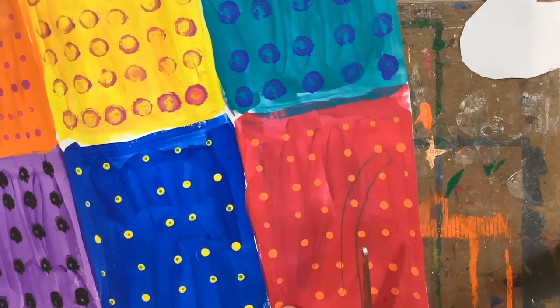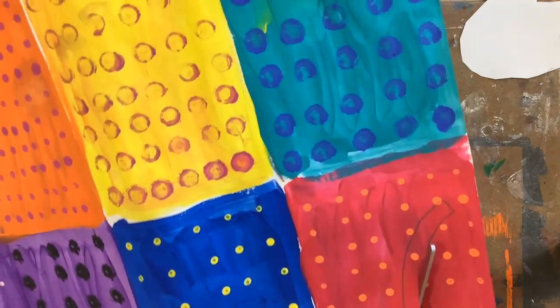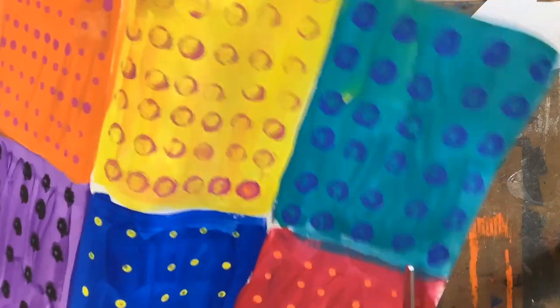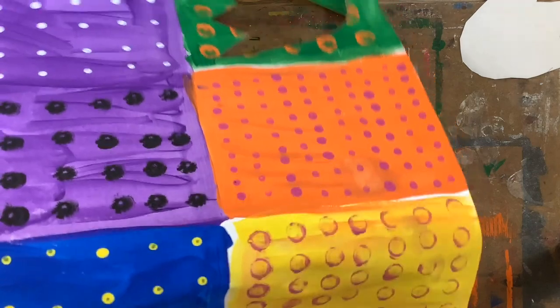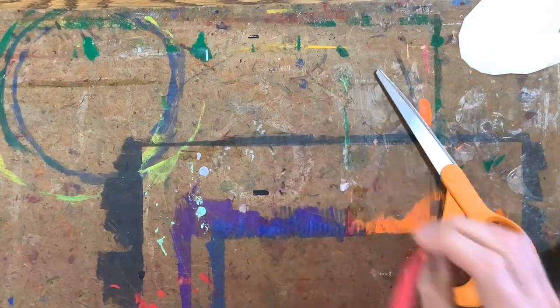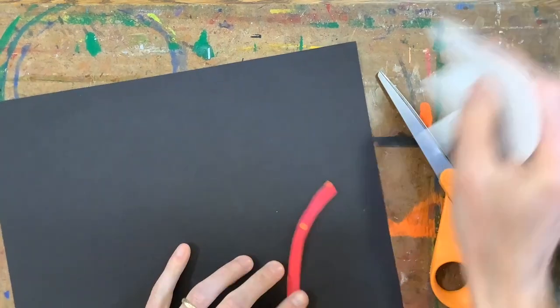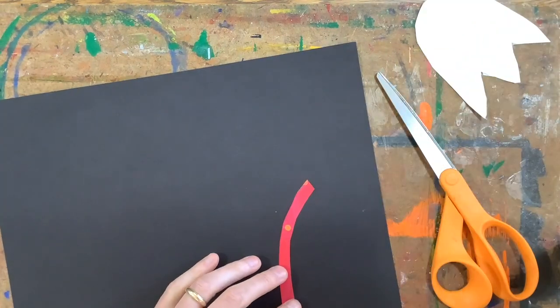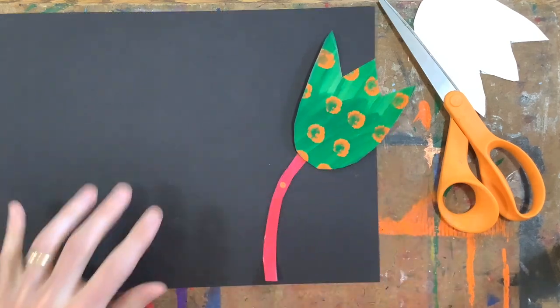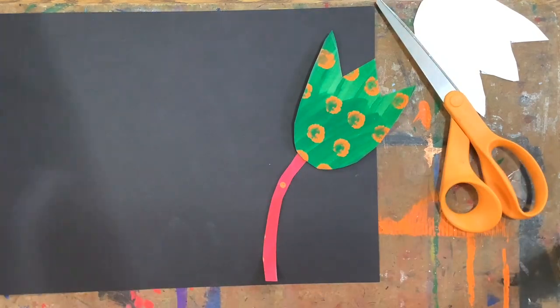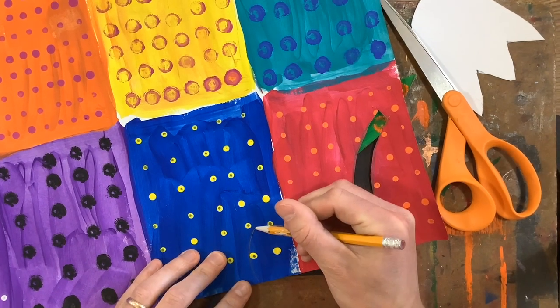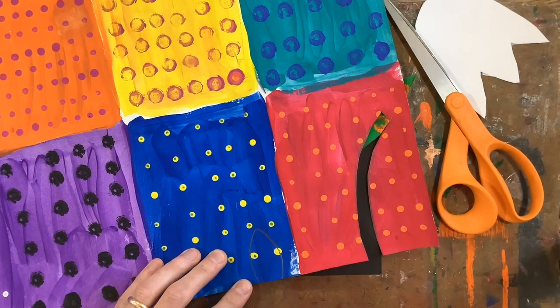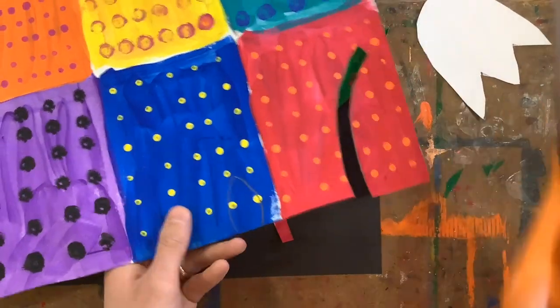That's gonna be my stem, and then you might want to give your flowers a little leaf or two. Right now we can kind of see what this is gonna look like, so maybe I'll put this one over here. I probably want to do a little leaf for it. Leaves are kind of this football shape, and I can cut that out.